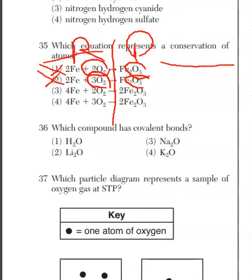If I go down to choice three, I have four irons on the left. Two times two is four on the right. I have two times two, which is four oxygens on the left. I have two times three, which is six on the right. It cannot be choice three. Well, the only thing left, of course, is choice four.